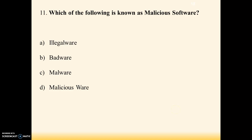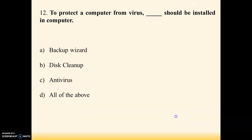Next question: which of the following is known as malicious software? Option A: illegal way, option B: bad way, option C: malware, option D: malicious ways. Answer is option C — malware.